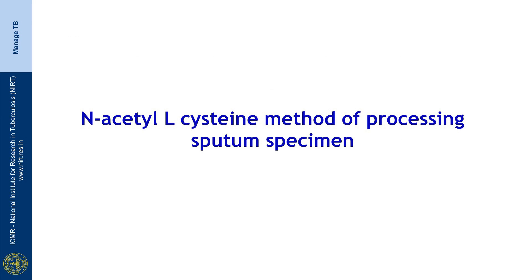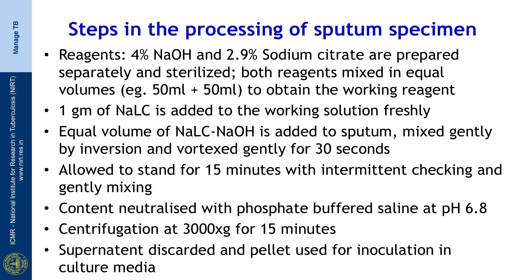In this demonstration we will be looking at the N-acetyl-L-cysteine method of sputum processing. The steps involved are: first, we prepare the reagents — 4 percent sodium hydroxide and 2.9 percent sodium citrate — which are prepared separately and sterilized. Both reagents are then mixed in equal volumes, for example 50 ml plus 50 ml, to obtain the working reagent.